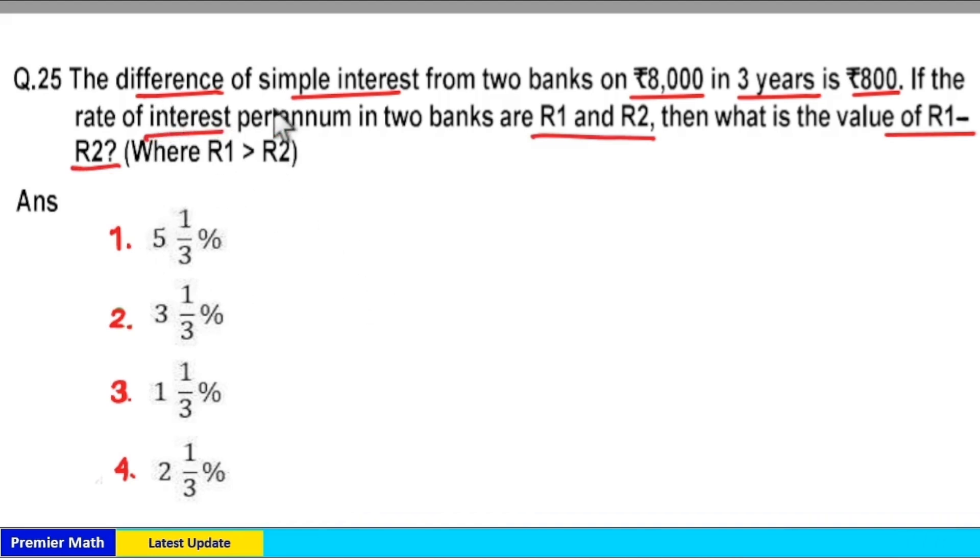Here this is difference in simple interest and it is 800 upon this 8000 in 3 years. So this 800 is 10 percentage of principal 8000. So this 10 percentage generated in 3 years. Then in 1 year rate difference generated is equal to 10 by 3. 3 and 1 by 3 percentage, option 2 is your answer.